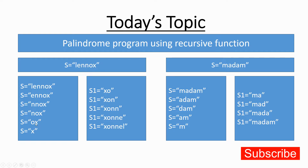Once the function starts returning, we return 'x' to its previous call which had the string 'ox'. We join 'x' with the first character of that previous string — so 'x' plus 'o' gives 'xo', collected into s1. This gets returned to the previous call with string 'nox', where we take the first character 'n', giving 'xon'. This continues up the chain until we build the full reversed string. Since 'lenox' is not a palindrome, s is not equal to s1 and we print that the string is not palindrome.